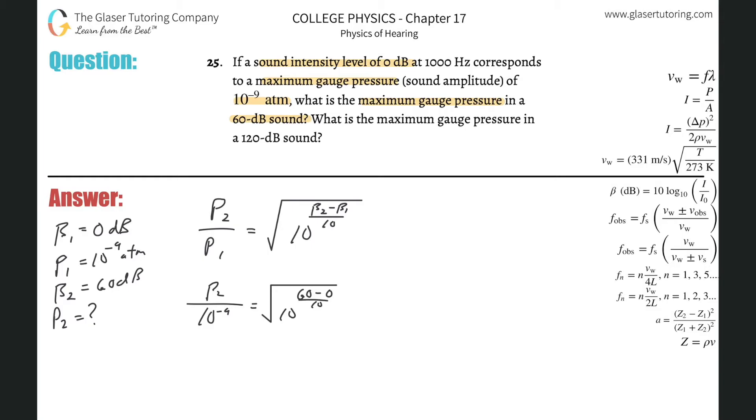So this is basically 10 raised to the 6, right? So this works out to p2 all over 10 to the minus 9 is going to be equal to the square root of 10 to the 6th.